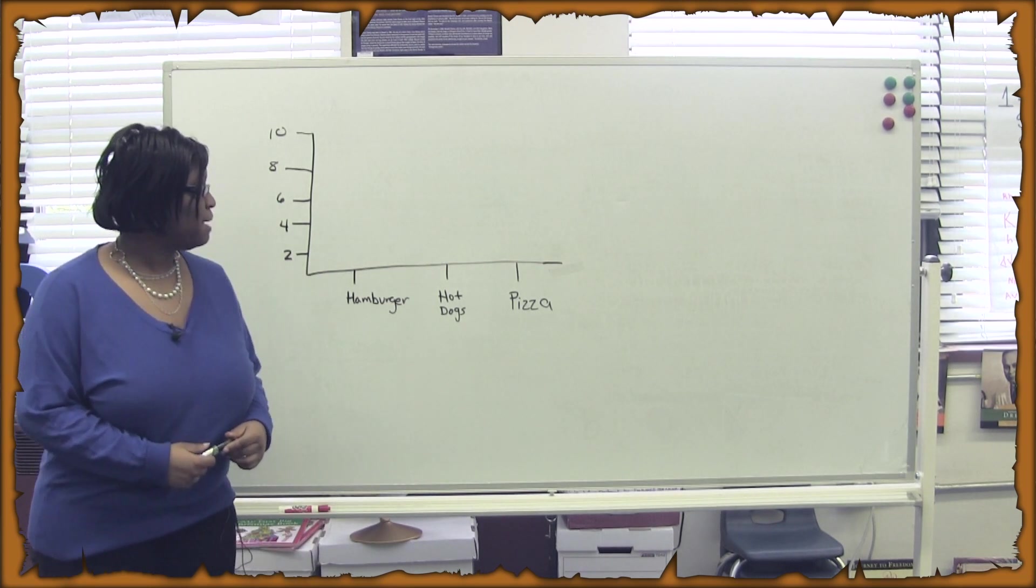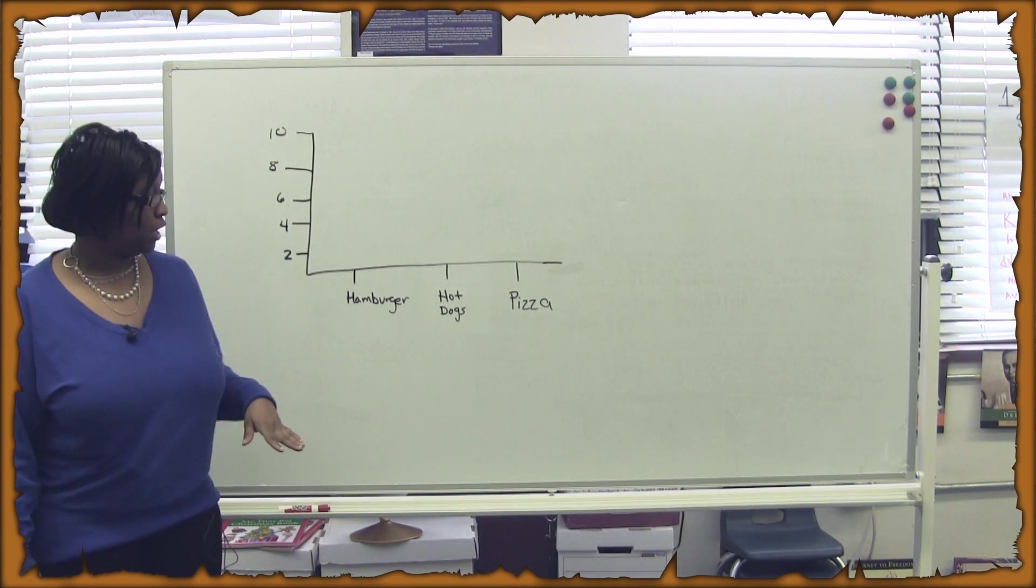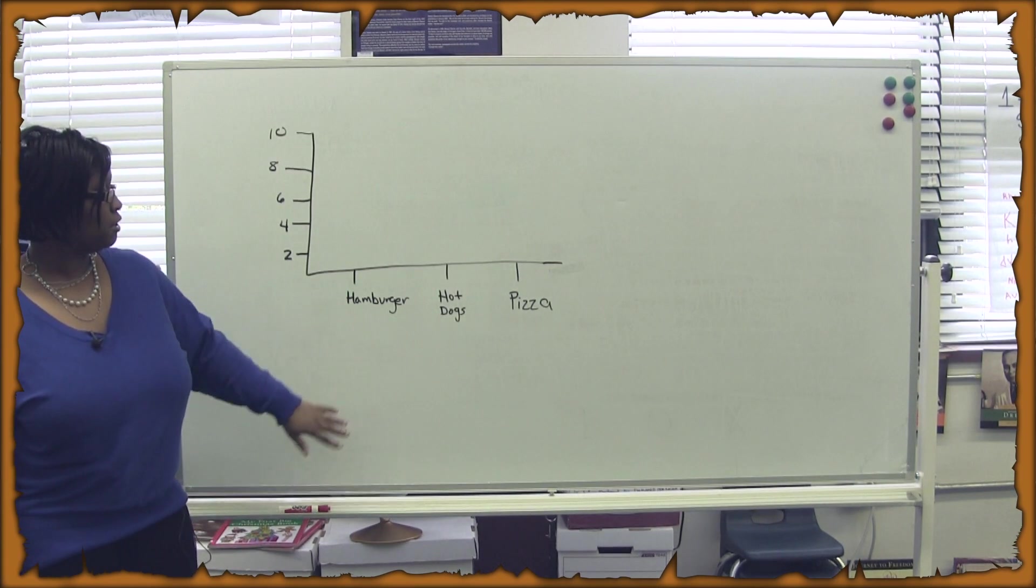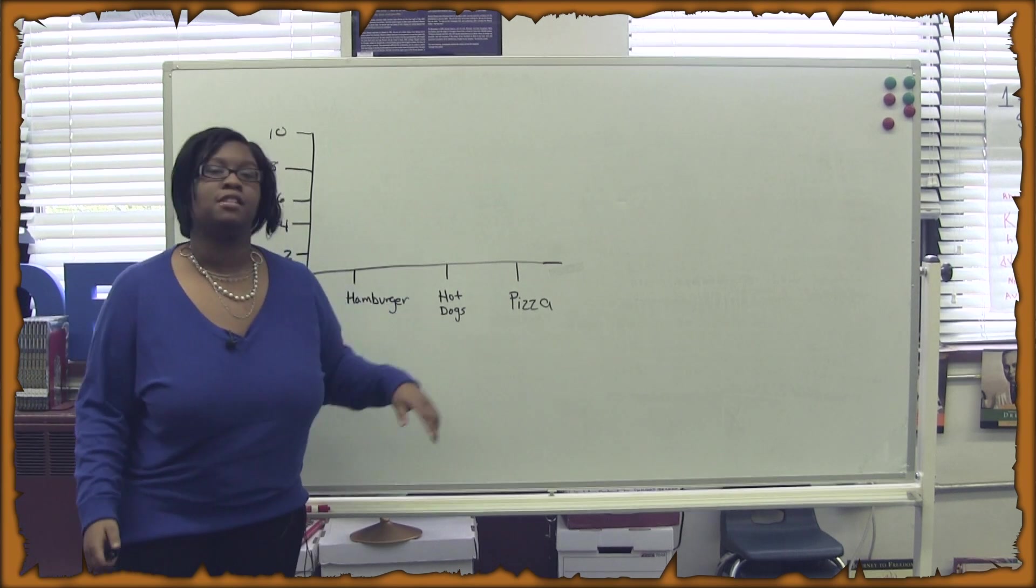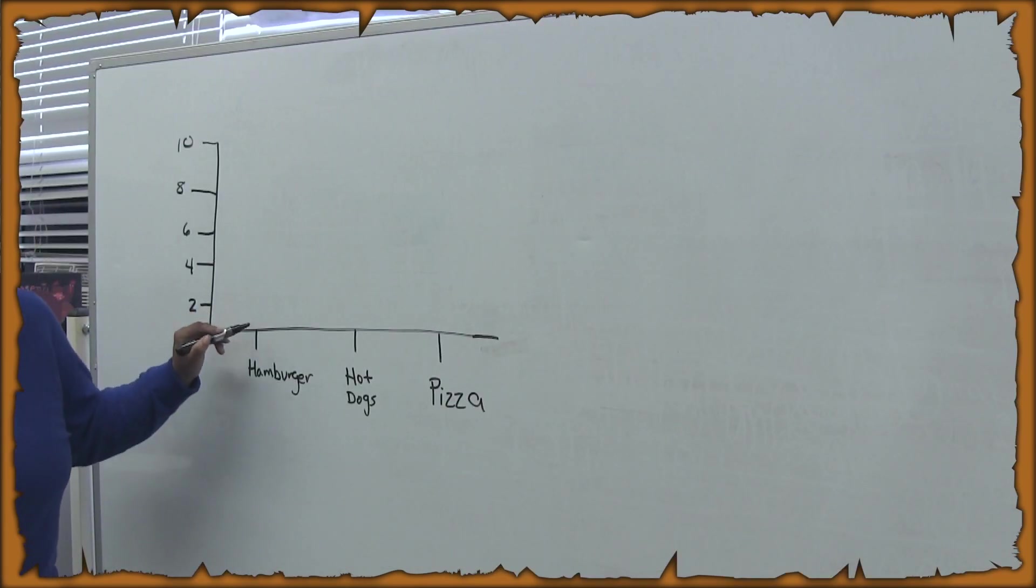So, let's make a prediction. Let's say that each of our class makes like one of the three options. We have hamburgers, hot dogs, and pizza. So, let's just say that four students like hamburgers.